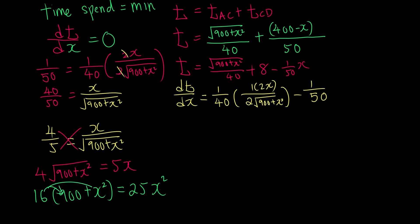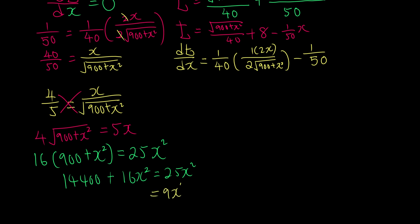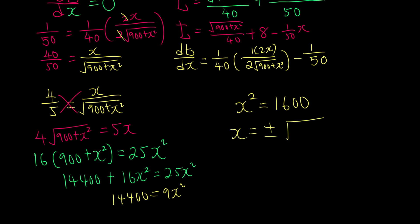Expanding the bracket: 14,400 + 16x² = 25x². Moving 16x² to the right: 9x² = 14,400, so x² = 1,600. Therefore x = ±√1,600 = ±40. Since distance cannot be negative, x = 40.